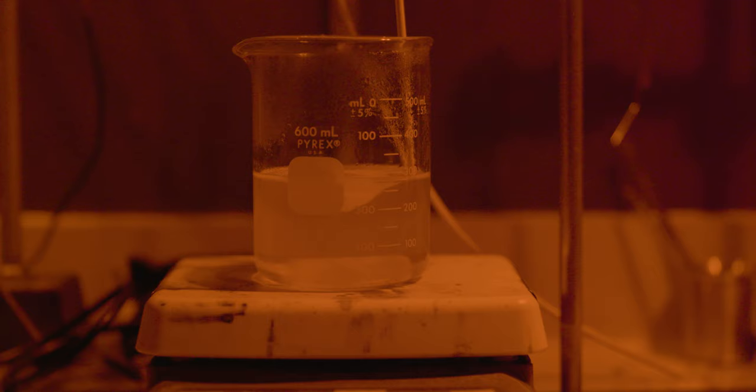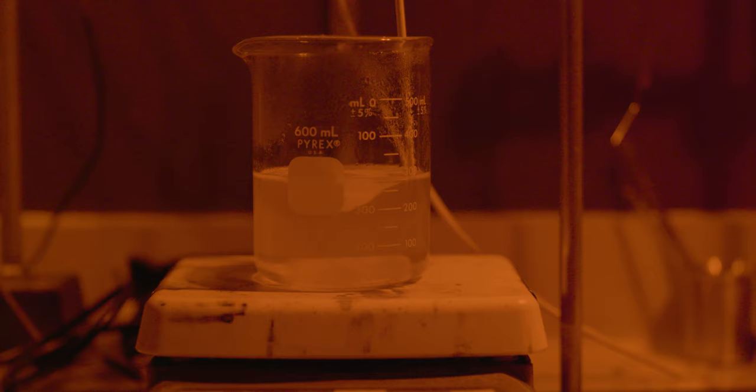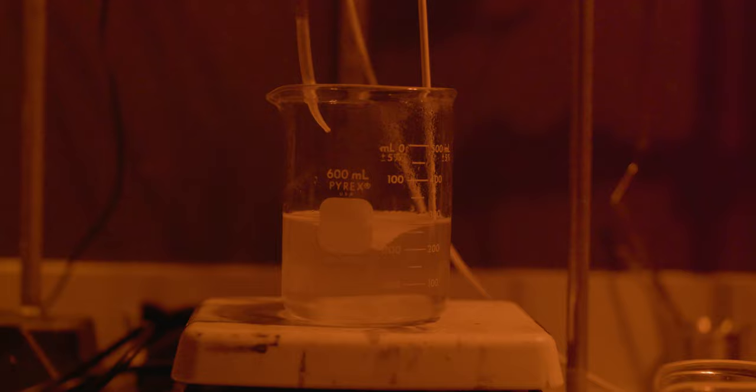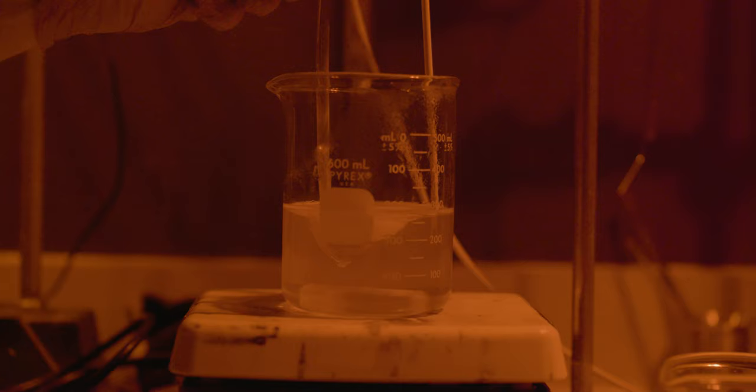Now it's time to turn on the red safe lights. As we mix the silver nitrate and gelatin bromide mixture, the silver and bromide find one another and form tiny light-sensitive crystals. The crystals are only sensitive to blue light, so we can work under red safe light to ensure we don't ruin the emulsion.